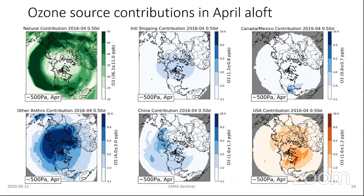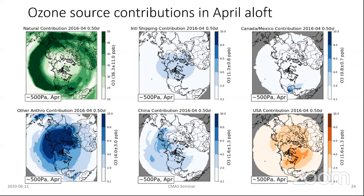For international shipping in April, there's not a lot to see — concentrations are heavily weighted towards the pole. For Canada and Mexico, there are some high contributions down by the Yucatan. For the other anthropogenic, there's a lot going on representing everything not yet discussed. The China contribution is a small component of the overall. The U.S. contribution is in the same general range as China's contribution to other countries — so just as we are downwind of others, other countries are downwind of us. This is at 500 hectopascals in April.